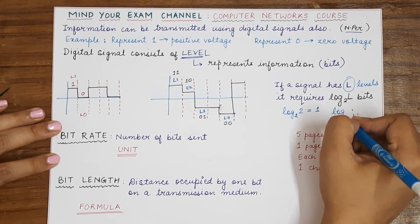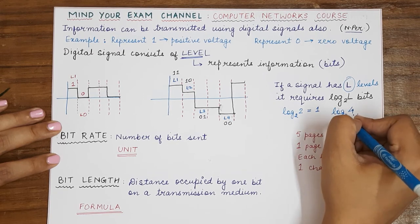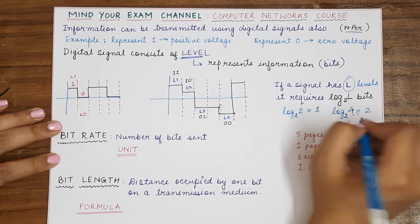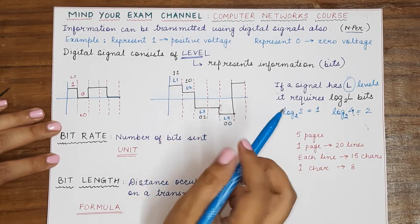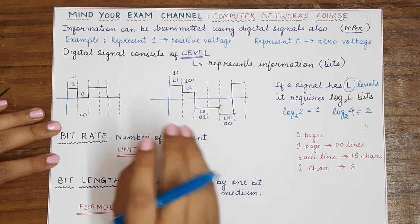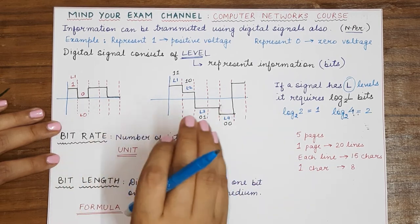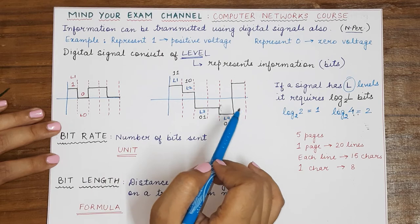Now we have four levels. So log four base two will give you two. That means each level is representing two bits or we can say two bits of information can be saved, can be transmitted at each level.